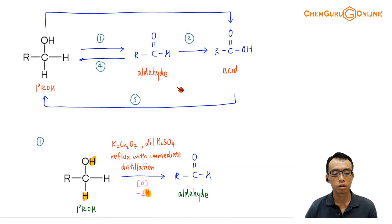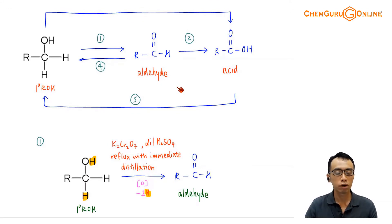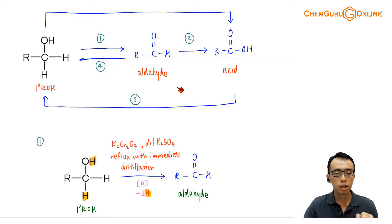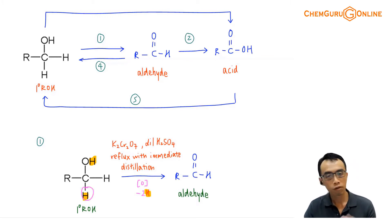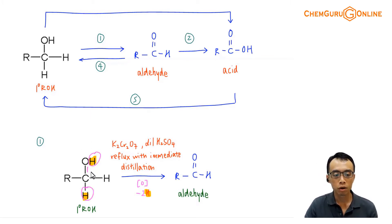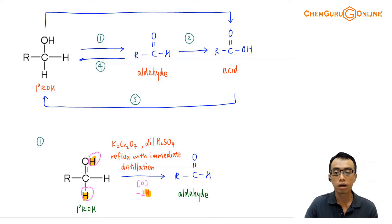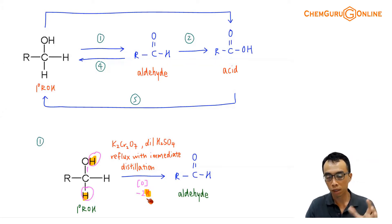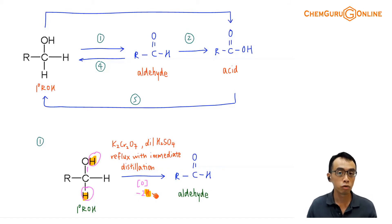Reaction number one is the oxidation of a primary alcohol to an aldehyde functional group. To convert a primary alcohol to an aldehyde, I remove the hydrogen from the carbon and remove the hydrogen from the oxygen, then form a double bond between carbon and oxygen to give the aldehyde functional group. Notice I've also mentioned the change in species: minus two hydrogen.